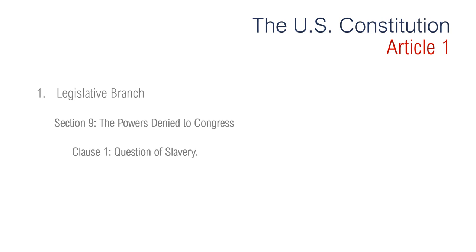Section 9 is regarding the powers denied to Congress. Clause 1 tackles the question of slavery. It says the migration or importation of such persons as any of the states now existing shall think proper to admit shall not be prohibited by Congress prior to the year 1808, and that a tax or duty may be imposed on such importation not exceeding $10 for each person. When they say 'person,' they are referring to slaves. Congress outlawed the slave trade in 1808, but that didn't mean they outlawed slavery — they just outlawed the trading of slaves at that time.